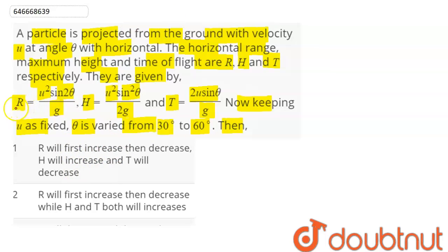So coming first to the range. Angle between 30 to 60, hence sin2θ value will vary between sin of 2 into 30, that is 60 to 120 degrees. So the graph of sine from 60 to 120 degrees can be plotted as - this is 90 degrees, this is 60 degrees and this is 120 degrees.